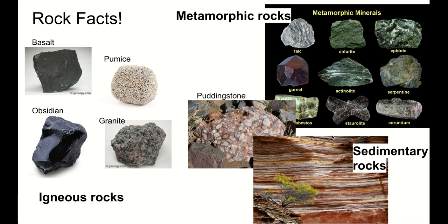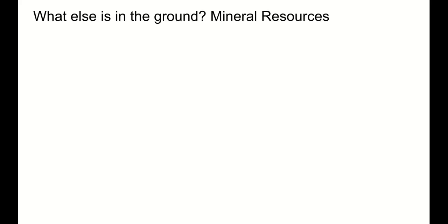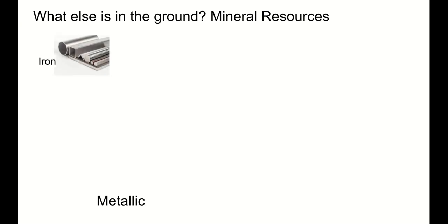That's what to know about the rock cycle — just think about the slow process that generates all these different forms of rock. But our focus today is rocks and mining. What else is in the ground beside rock? Mineral resources. We've got two types: our metallic mineral resources include things like iron, which is useful in steel production.